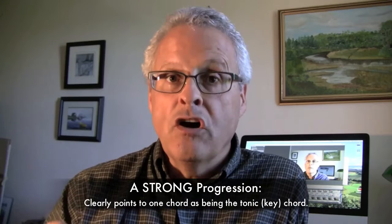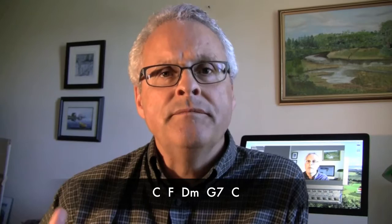So let's take a look at what those are. A strong progression is one that clearly points to one chord as being the tonic chord or the key chord. So if you take a progression like C, F, D minor, G7, C — you play through that a few times and you start to hear that the C chord sounds like the tonic. It sounds like the progression is moving toward that C chord, and every time C happens you really get that sense that you've arrived at home. That's what a strong progression is.